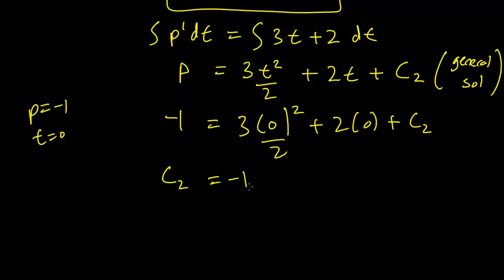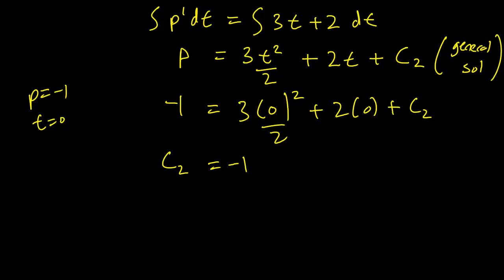And this gives us our second constant c2 equals minus 1. And our position is going to be p equals 3t squared over 2 plus 2t minus 1.